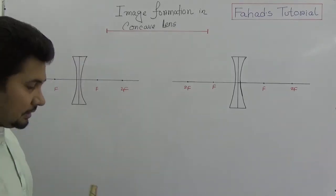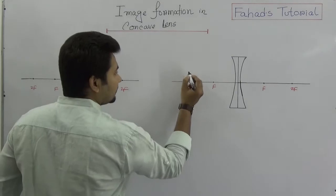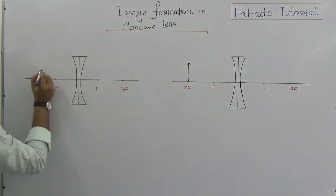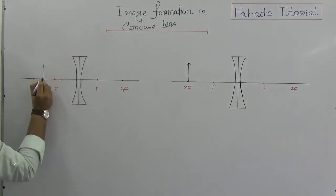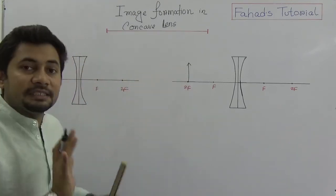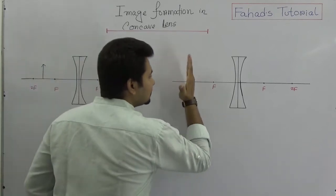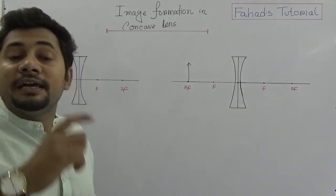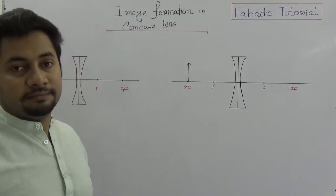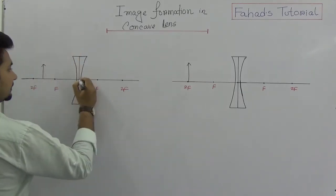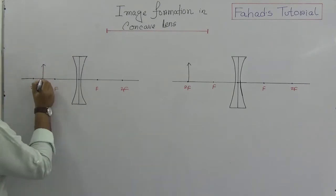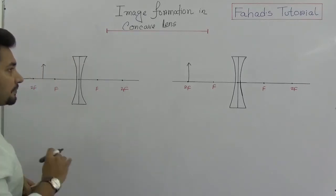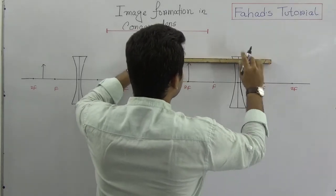Suppose one object is placed at 2F and another is placed between F and 2F — two different objects at two different positions. From the science convention videos, in a lens all distances are measured from the optical center. So this is the optical center, and this object is placed between F and 2F.